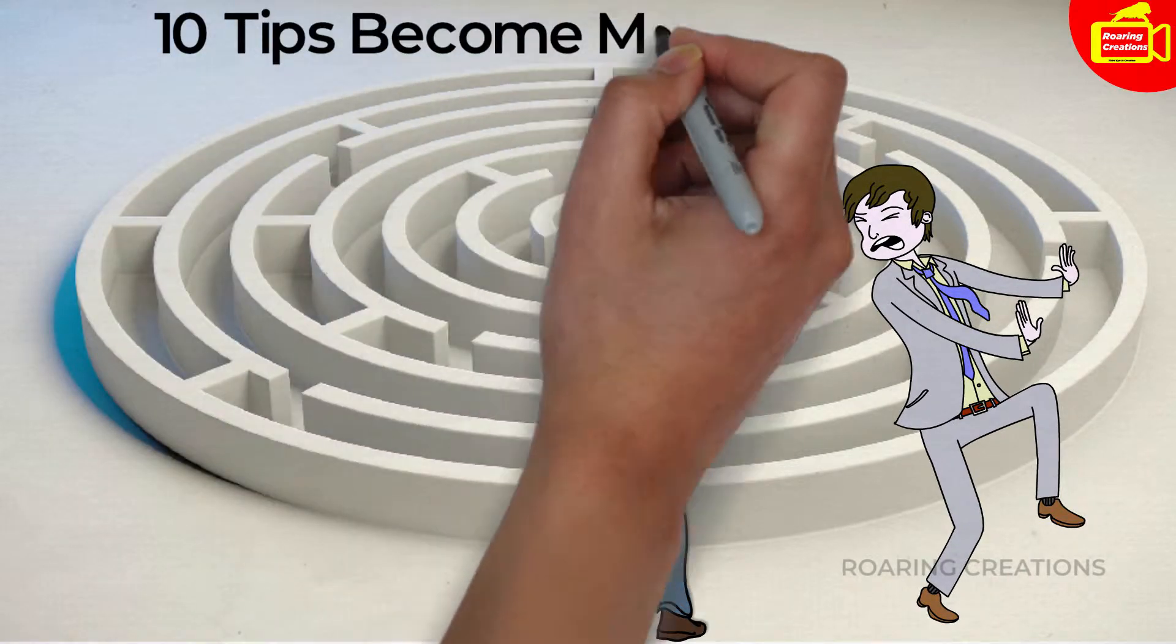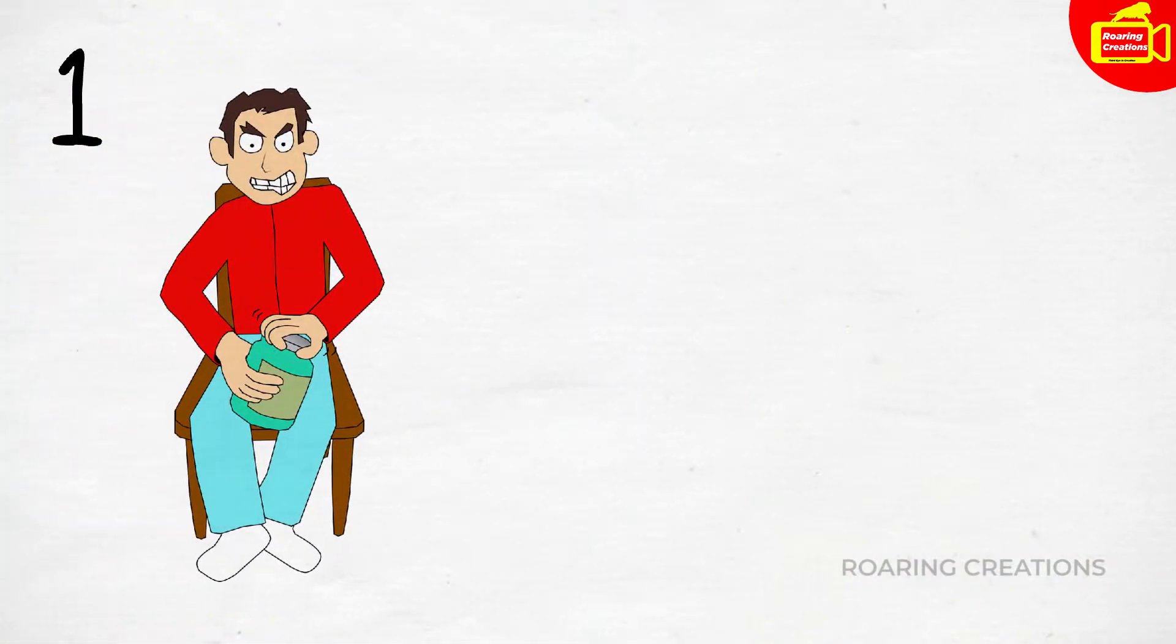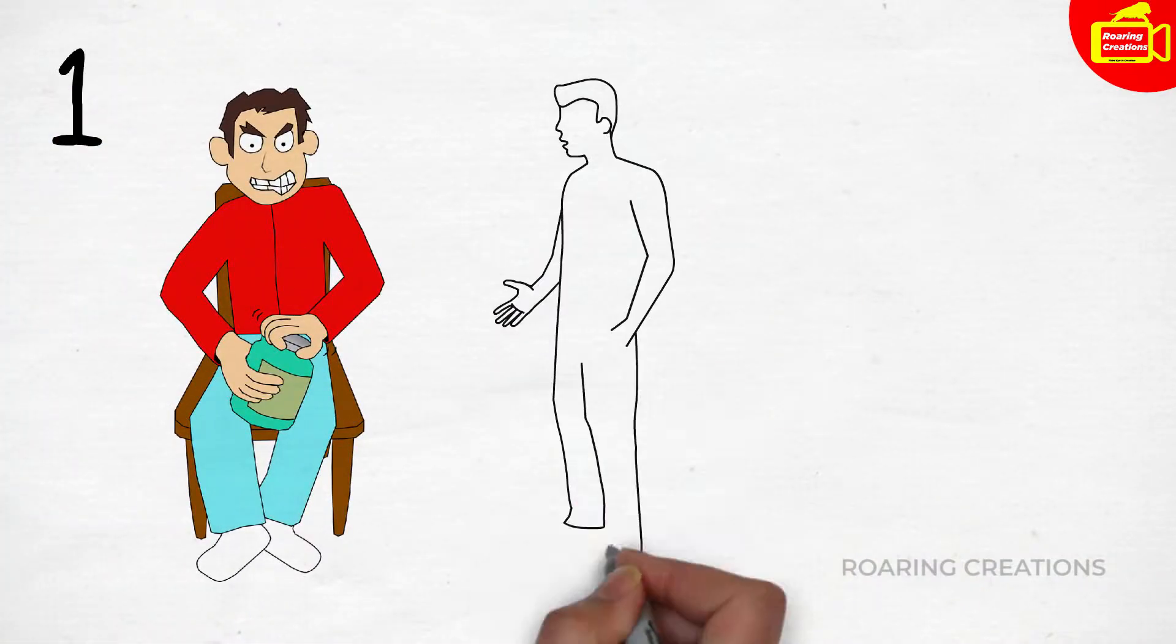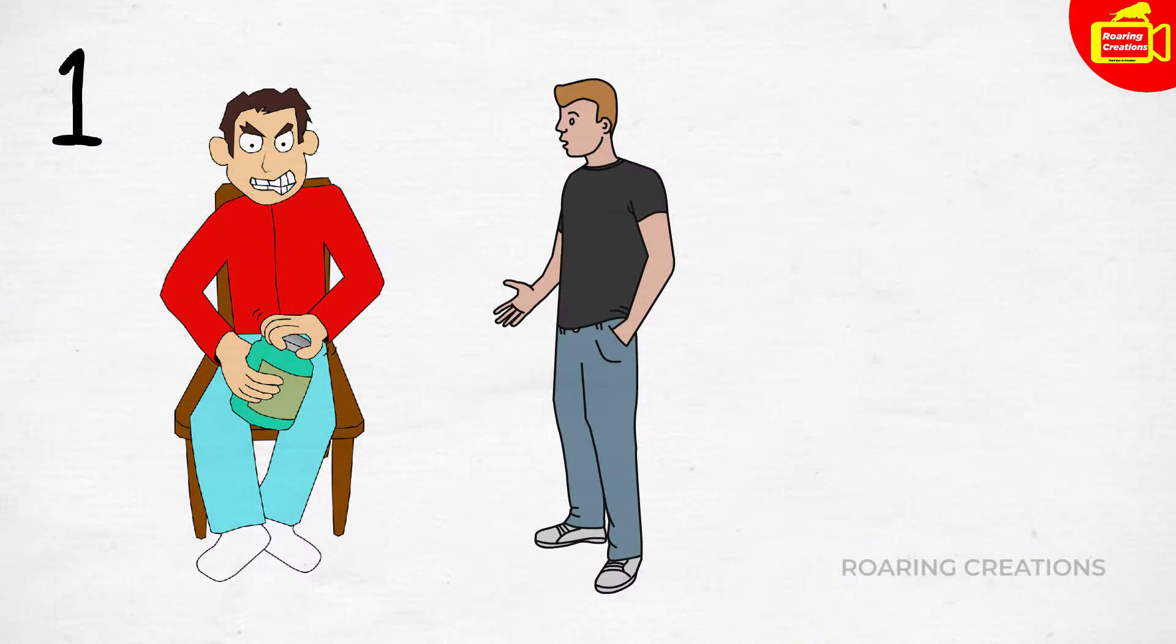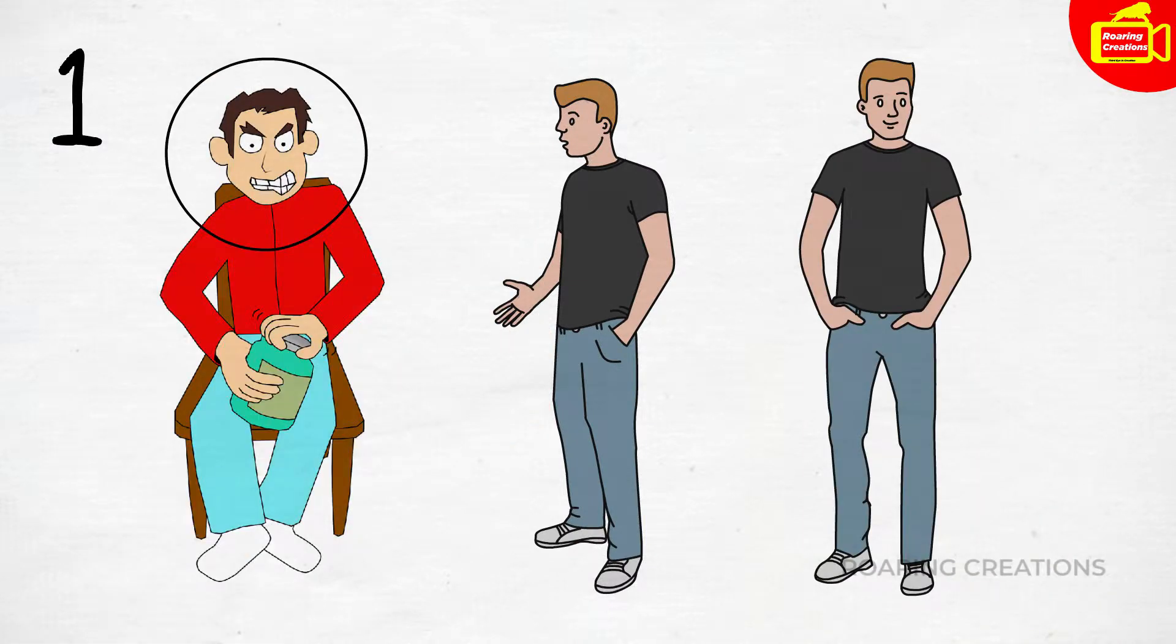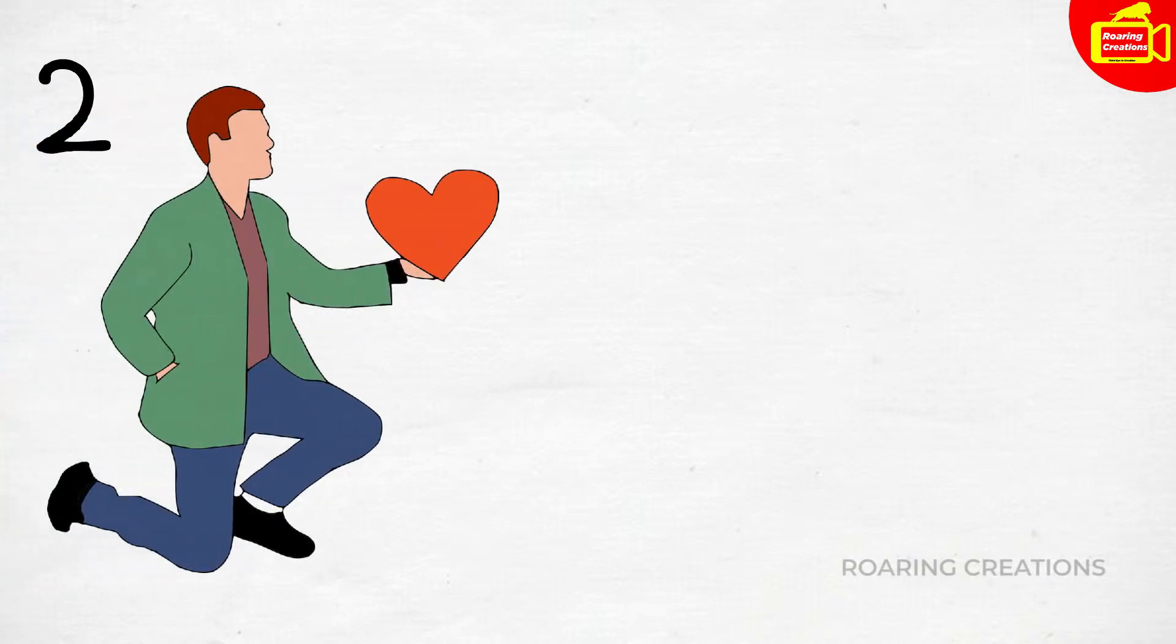Let's begin. Tip number one: Don't try to change others. Just change yourself according to situations. Accept other people and things as they are. Tip number two: First learn to love yourself and your life. Respect whatever you have now.